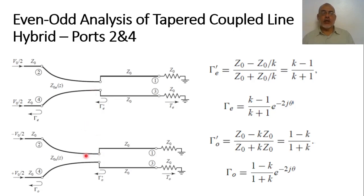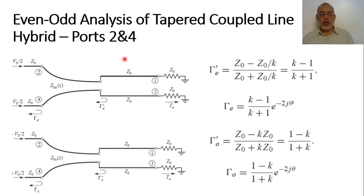We are going to study the even and odd circuits separately. We have two options: either to excite from port 2 and port 4, or to excite from port 1 and port 3. We start with excitations from port 2 and port 4.